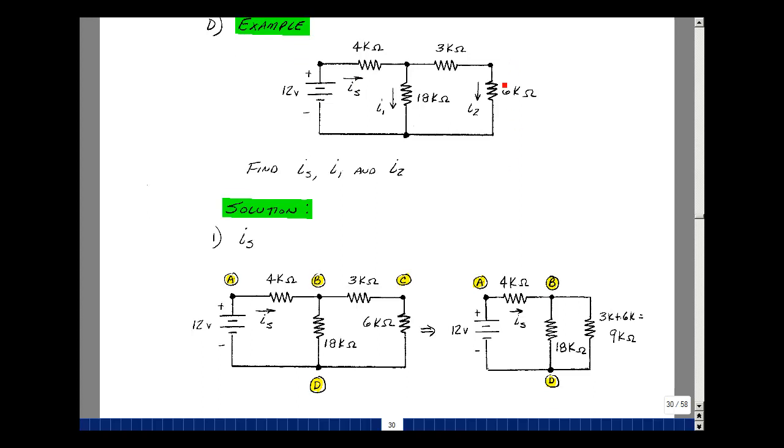Let's start at the right-hand side of the equation. Let's reduce this to an equivalent resistance, and then solve for the current I sub s by taking the voltage, 12 volts, and dividing by the equivalent resistance that we find.